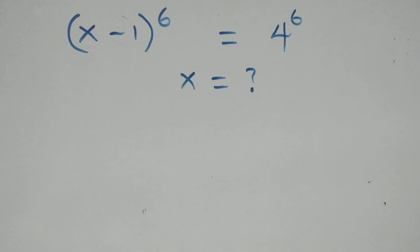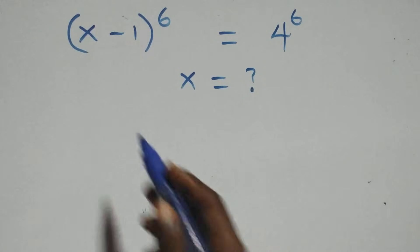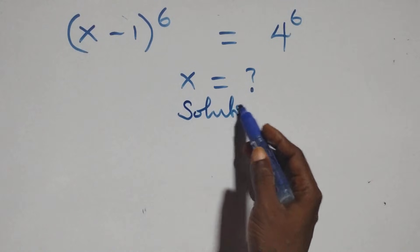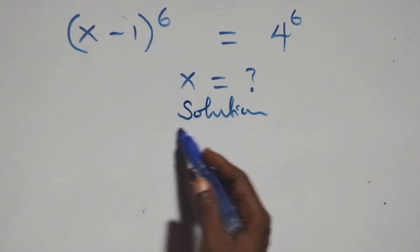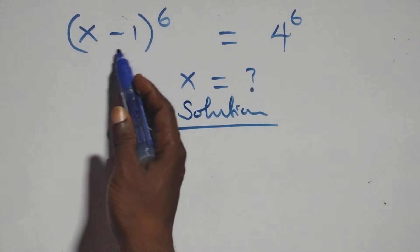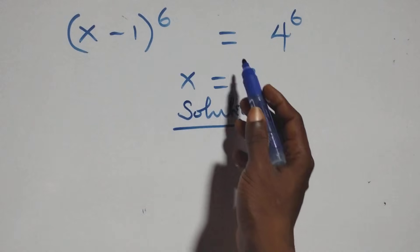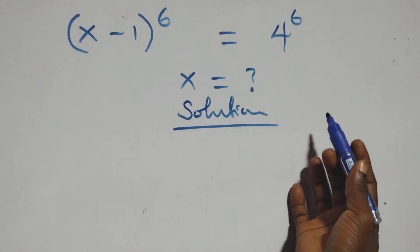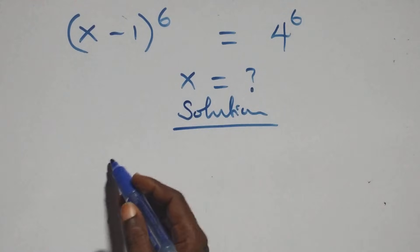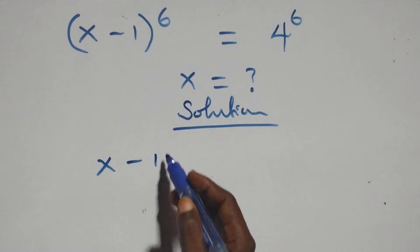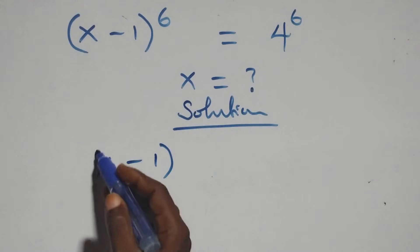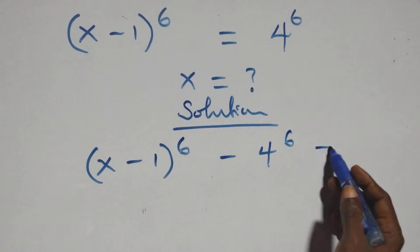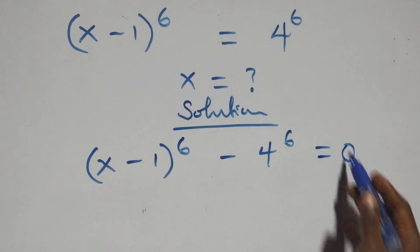Hello, you are welcome. How to solve this nice exponential equation. What we have here is: (x minus 1) raised to power 6, equals 4 raised to power 6. We take 4 raised to power 6 to the left-hand side, and this becomes (x minus 1) raised to power 6 minus 4 raised to power 6 equals 0.